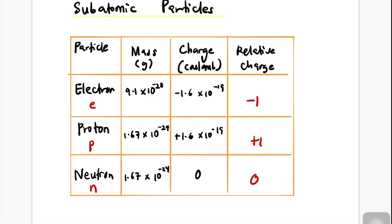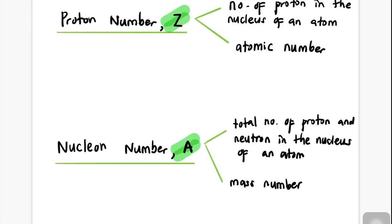Proton number is the number of protons in the nucleus of an atom, also known as the atomic number. Nucleon number is the total number of protons and neutrons in the nucleus of an atom, also known as the mass number. The symbols are Z and A respectively.